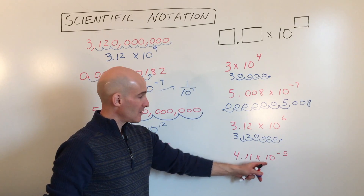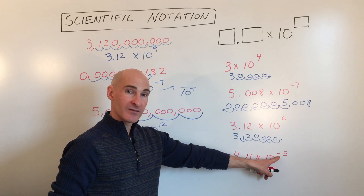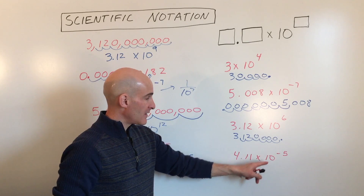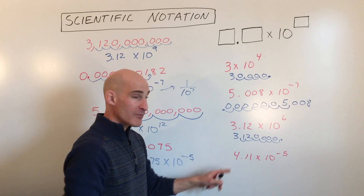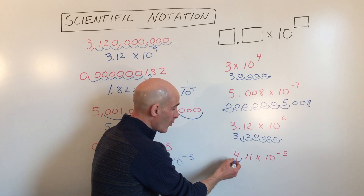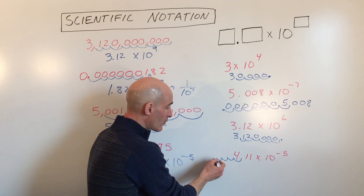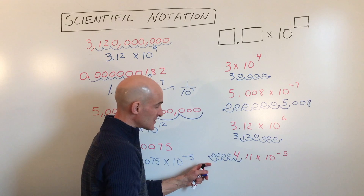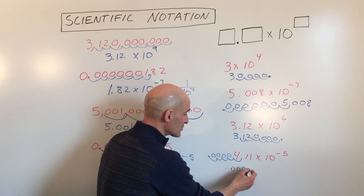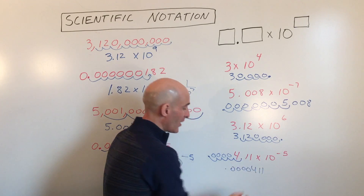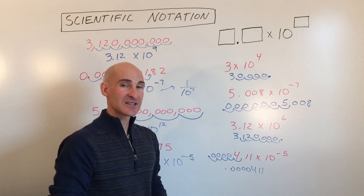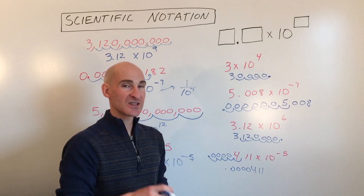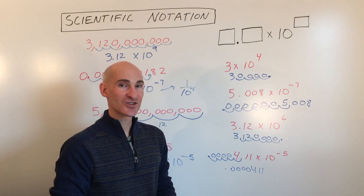Last example: we've got a negative exponent, which tells us to move the decimal point to the left — this is a really small number. We move it five places to the left, add placeholder zeros, and get 0.000041 1. So this has been a video about how to work with numbers in scientific notation and converting them from standard notation to scientific notation and vice versa.